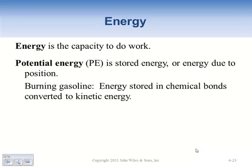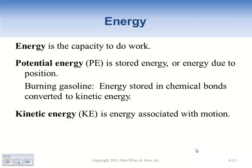For example, burning gasoline - the energy is stored in the chemical bonds and then converted into kinetic energy, our next type. Most chemical energy is potential energy until it does something. The other big kind of energy is kinetic energy - the energy of motion. Things will usually convert back and forth between potential and kinetic energy.